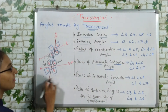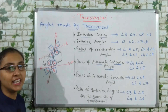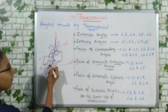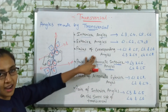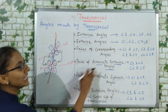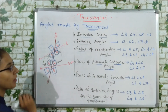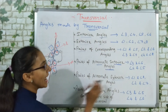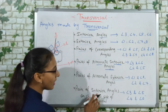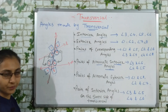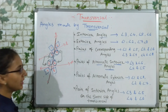Quick recap: interior angles are 3, 4, 5, 6; exterior angles are 1, 2, 7, 8. Corresponding angle pairs: 1 & 5, 3 & 7, 2 & 6, 4 & 8. Alternate interior angles: 3 & 6, and 4 & 5. Alternate exterior angles: 1 & 8, and 2 & 7. Interior angles on the same side of the transversal: 3 & 5, and 4 & 6.